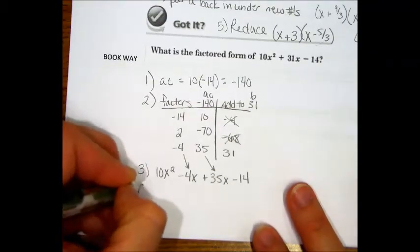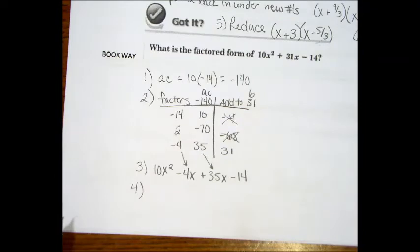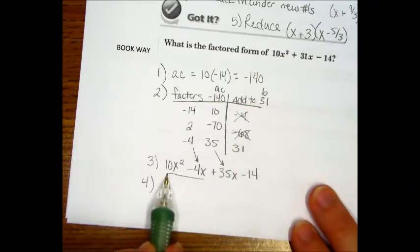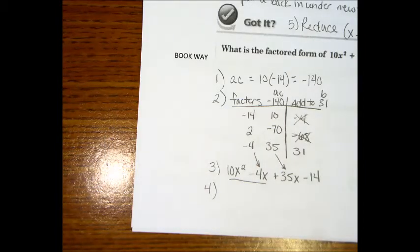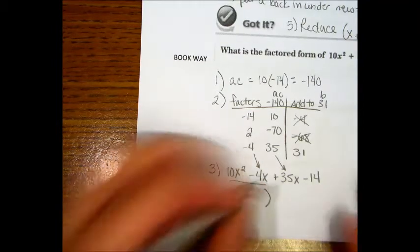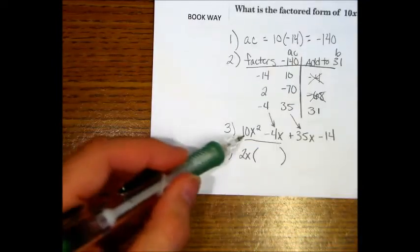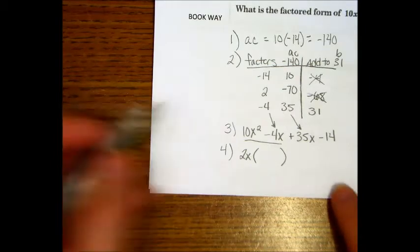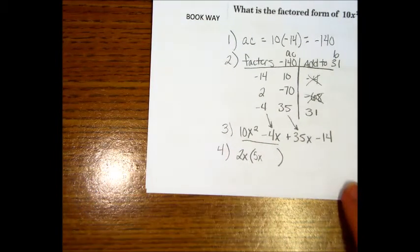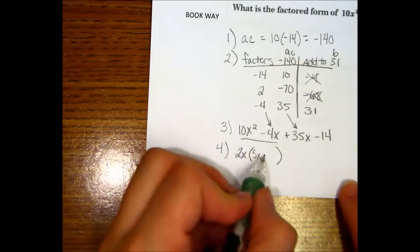And then we are going to subtract 14. That is correct. We are just following the same steps we took on the front problem. What's step number four? That's that grouping thing. It is. I'm going to look at the first two things together. What goes into 10 and 4? 2. And then they each have an x, right? So, we're going to divide 2x out. What is 10x squared divided by 2x? 5x. That is correct. Now, what is negative 4x divided by 2x? Negative 2.